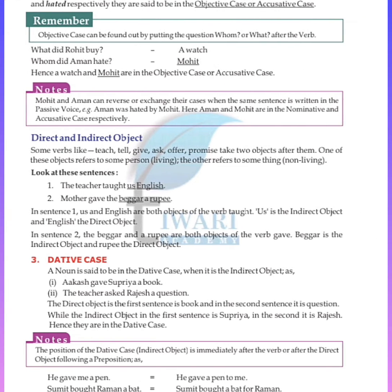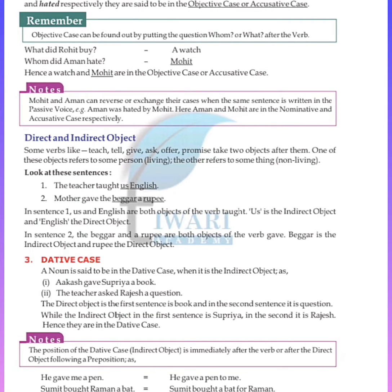Remember: the objective case can be found by putting the question whom or what after the verb. What did Rohit buy? A watch. Whom did Amun hate? Mohit. Hence, a watch and Mohit are in the objective or accusative case.